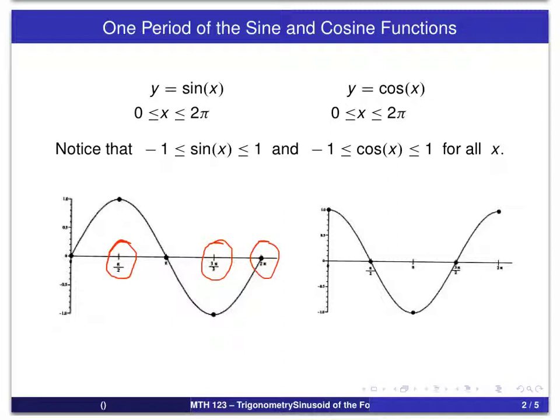And as you can see, both sine and cosine satisfy the inequalities minus 1 less than or equal to the value at x less than or equal to 1.